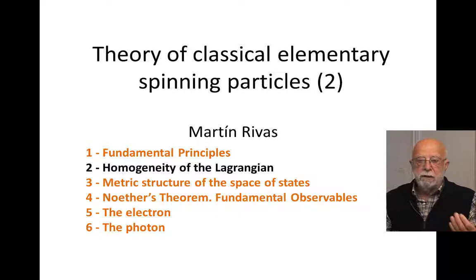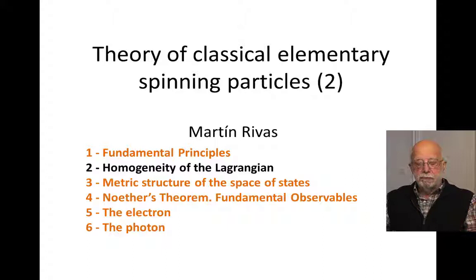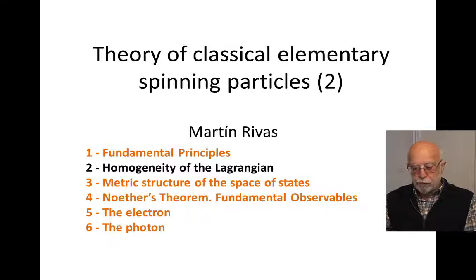This is the second lecture concerning a classical theory of elementary spinning particles. In this lecture we are going to analyze a mathematical property of the Lagrangian which describes elementary particles. This homogeneity is general for any arbitrary mechanical system such that the Lagrangian, when written in terms of the kinematical variables and their first-order derivatives with respect to some arbitrary evolution parameter, is always to be a homogeneous function.